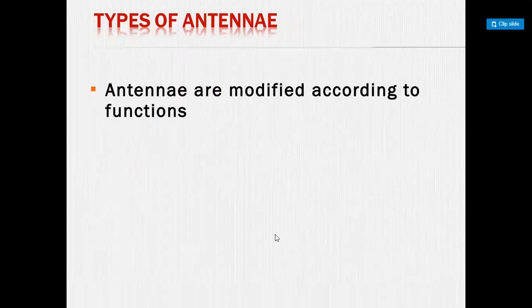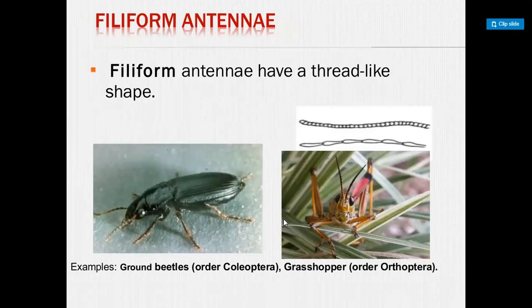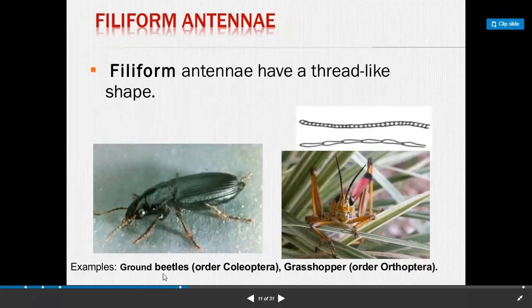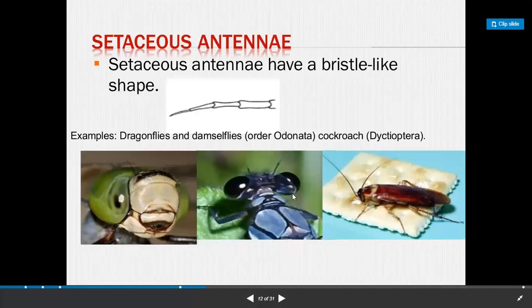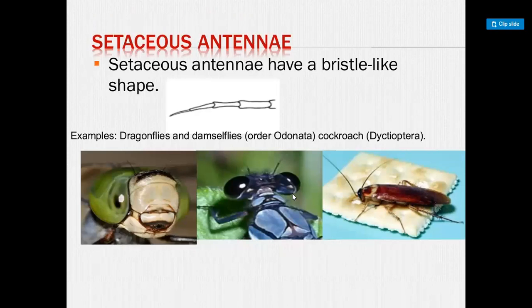Next are the types of antenna. Antenna are modified according to their function and structure, and differ across different insects. The first type is filiform antenna. Filiform antenna have a thread-like shape. Example: ground beetle, order Coleoptera, and grasshopper, order Orthoptera.